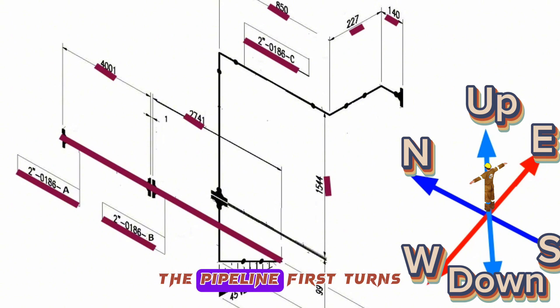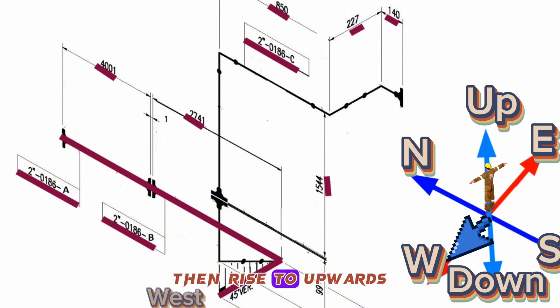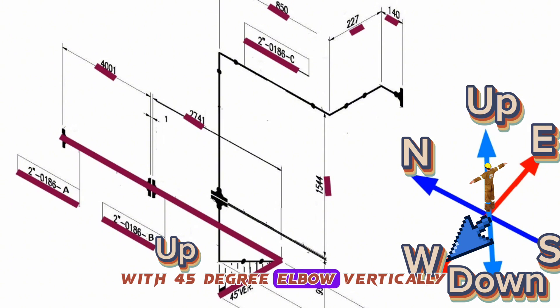In this point, the pipeline first turns to westwards with a 90-degree elbow, then rises to upwards with 45-degree elbow vertically.